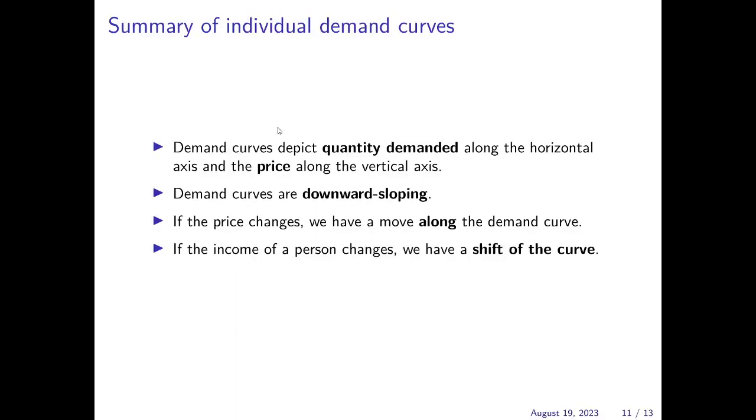So to summarize what we've learned here, we can plot demand curves where we have quantity demanded on the horizontal axis and the price along the vertical axis. And the demand curve would then be a downward sloping line in such a diagram. If the price of the good changes, we have a movement along the curve. So if the price increases, we would have a movement towards lower quantity demanded. And if the price decreases, then we have the opposite movement along the curve to a higher demand level, quantity demanded.